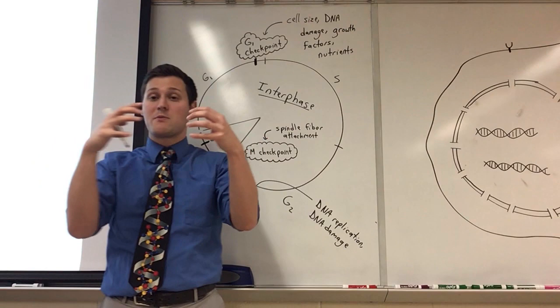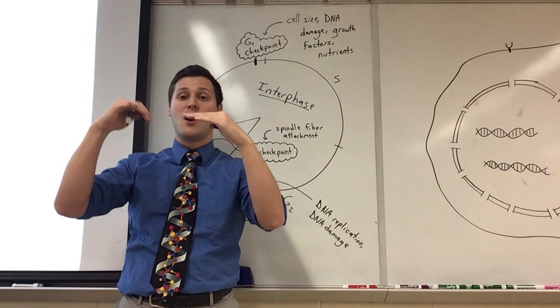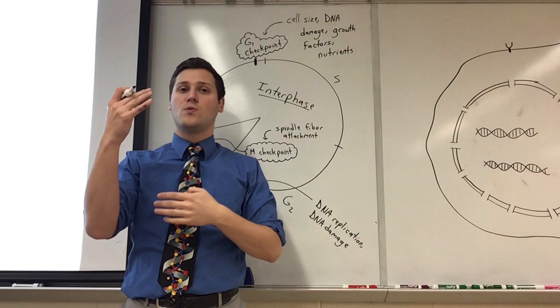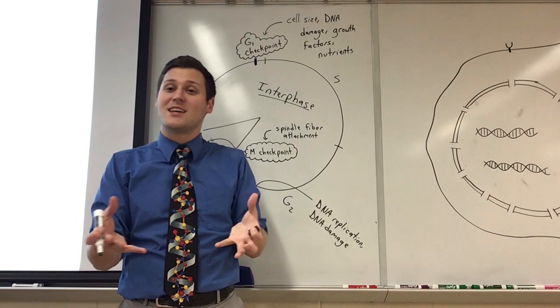So if the spindle fibers don't attach properly to the chromosomes, let's say one attaches while the other one doesn't. What could happen is one daughter cell could get an entire two chromatid chromosome and the other daughter cell will not get anything. So to prevent from having one daughter cell with too much DNA and another daughter cell with too little DNA,